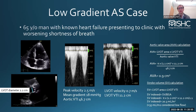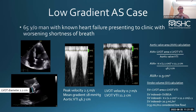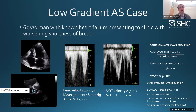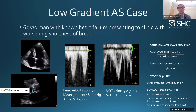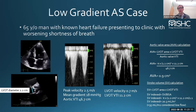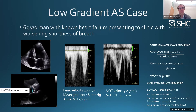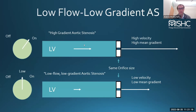This gets a little beyond the scope of today, but there's something called pseudo-severe aortic stenosis, where the valve would open better if the left ventricle had more squeeze. Sometimes we perform dobutamine stress echoes for these patients with low EF to distinguish true severe from pseudo-severe AS.